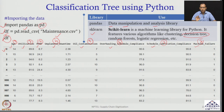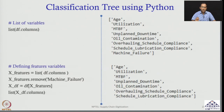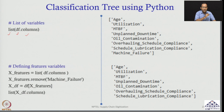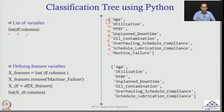Now the data is imported and stored in Python. The next step is to list the variables. Using df.columns with list, I will get all 8 variables: age, utilization, MTBA value, unplanned downtime, oil contamination, overall schedule compliance, schedule lubrication compliance, and machine failure. All 8 variables which were in the dataset are listed.